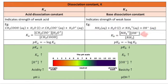From the dissociation equation, we can write Kb the same way we write Kc. When we take the negative log of Kb, we get pKb.